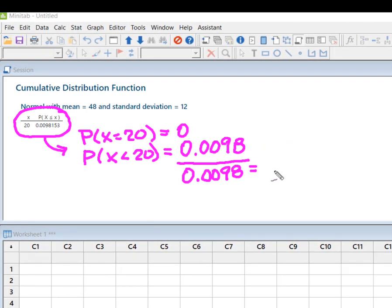Generally, probabilities are expressed as a percentage. So I'm going to move my decimal place two places to the right and end up with 0.98%, which tells me it's highly unlikely that Mike's going to get this desk built in less than 20 minutes.